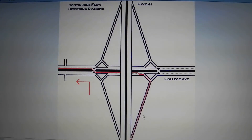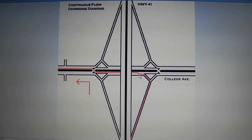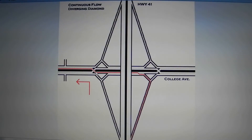The last left turn is if you're going north and want to go west on College. You get on College here, but you have to lane change over. You start going up the ramp here, go over the other road, you're going down the ramp, and on your way to the west.